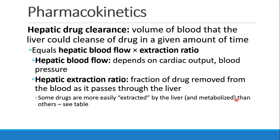A lot of this metabolism happens in the liver, so let's focus on hepatic drug clearance. Clearance means the volume of blood that the liver could completely cleanse of drug in a given amount of time. Hepatic clearance equals hepatic blood flow times the extraction ratio — what percent of drug can the liver pull out of the blood every time it's exposed? Most drugs are not 100% cleansed the first time they pass through the liver; it's an ongoing process.